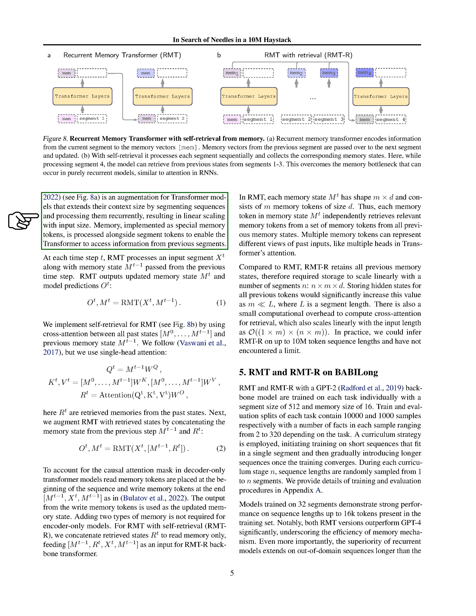For the RMT to retrieve information from its past states, we use a technique called self-retrieval. This involves using cross-attention between the current memory state and all previous memory states. We simplify this process by using a single head attention mechanism. The retrieved memories are then combined with the memory state from the previous step for the current processing. To ensure that the model can only use information from the past and not peek into the future, we place read memory tokens at the beginning and write memory tokens at the end of the sequence. This setup is particularly important for models that generate output one step at a time.